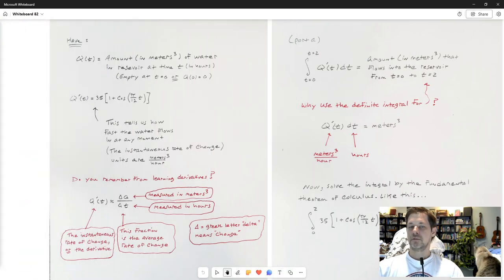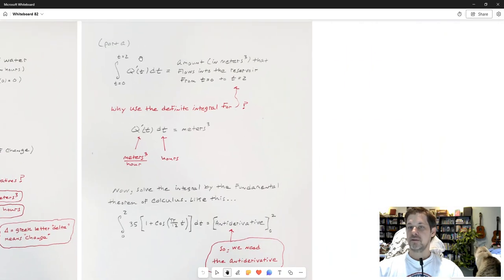I have something q'(t), which tells me how fast water is going in. How would I figure out how much water goes in? The short answer is by way of this definite integral: the definite integral from t equals 0 to 2 of q'(t) dt. That will tell me the amount in cubic meters that flows into the reservoir over that two hour period.